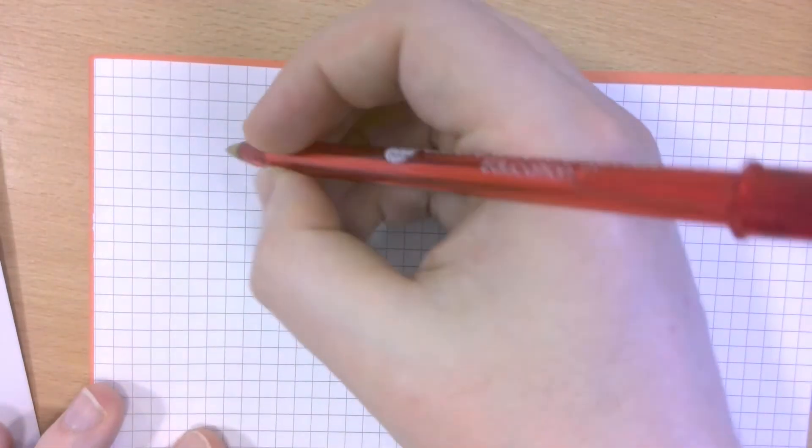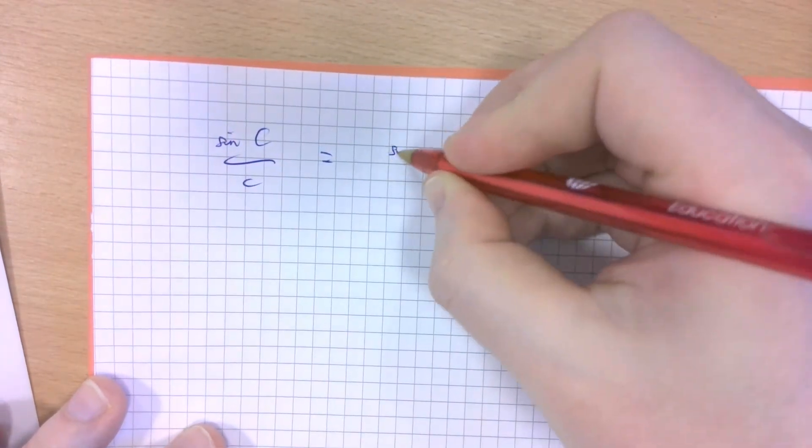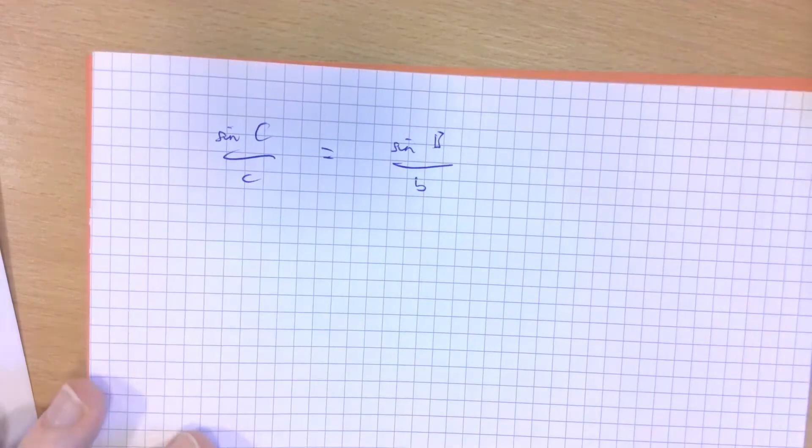So let's figure it out. The sine of an angle over the opposite side length is equal to the sine of an angle and another opposite side length pair.